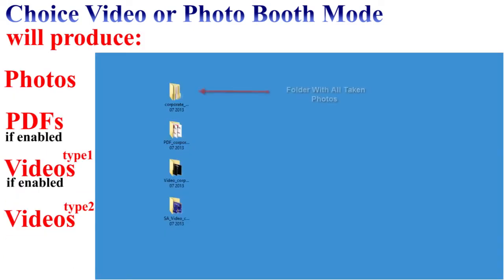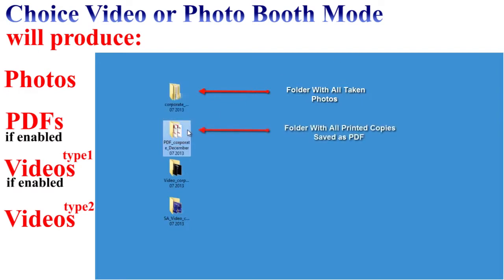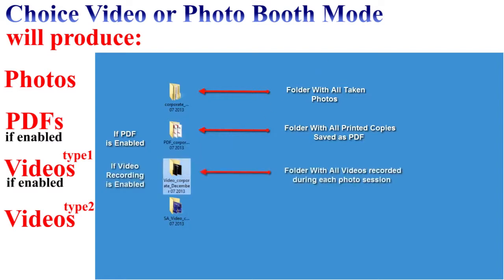With choice video or photo booth mode, PT Booth A1 Plus will produce the following: a folder with all of the taken photos, printed copies saved in a PDF file if you have enabled that function, and a folder with all of the video recorded during each photo session.